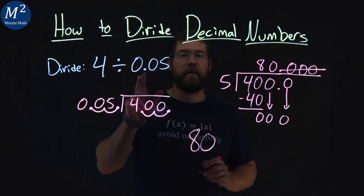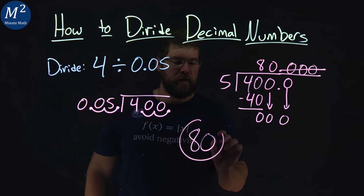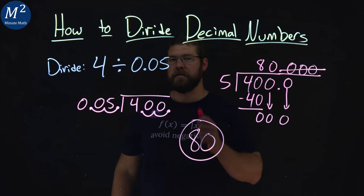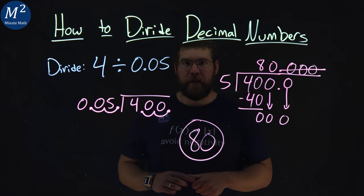And like I said, positive divided by positive is a positive. And there we have it. 4 divided by 0.05 comes out to be a positive 80.